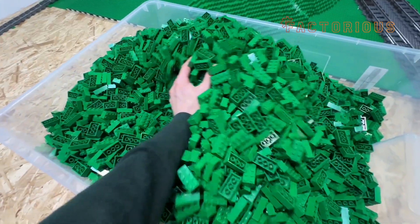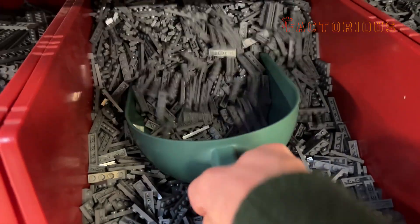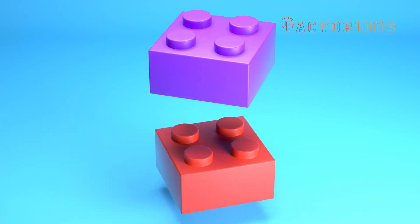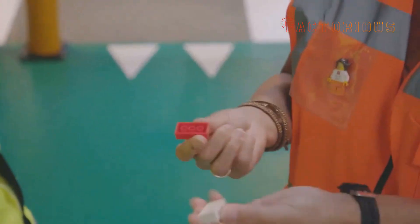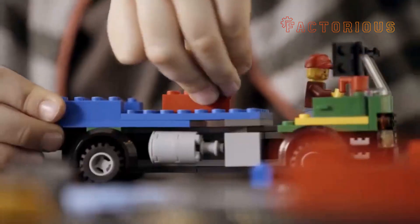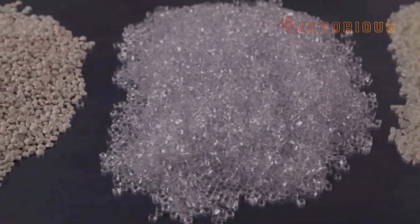Why ABS? Because Lego bricks need to do something very special. Click together and stay together, but also come apart without breaking. If the plastic is too soft, the bricks won't hold. Too hard, and they'll snap or warp. ABS nails that balance perfectly.